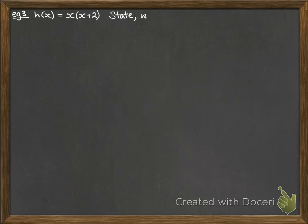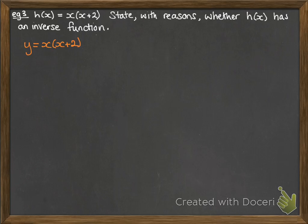Now we have a function h(x). We want to state with reasons whether h(x) has an inverse function or not. If you were finding the inverse, you would start by writing y equals your function. So we've got y = x² + 2x. Here we have a problem because x² is not a one-to-one function, and we know that functions only have an inverse if they're one-to-one.